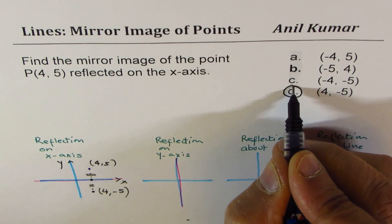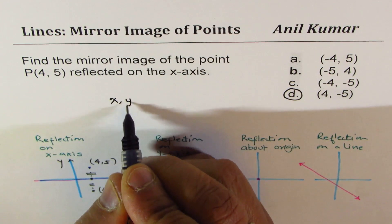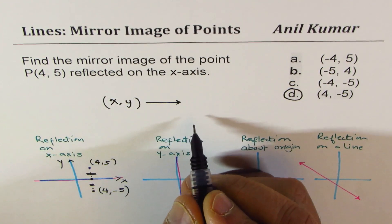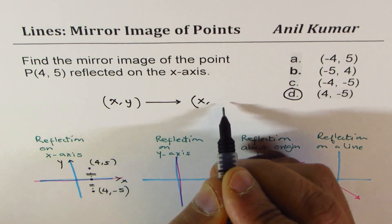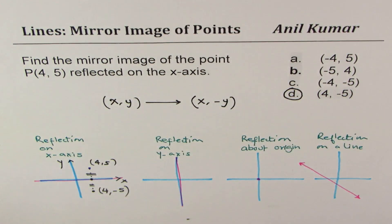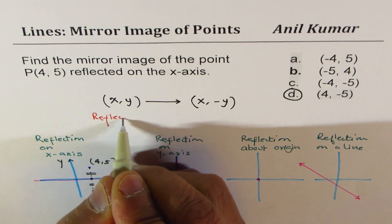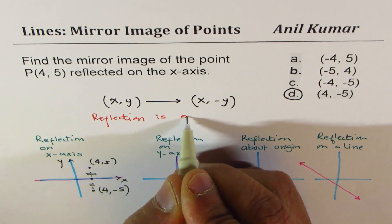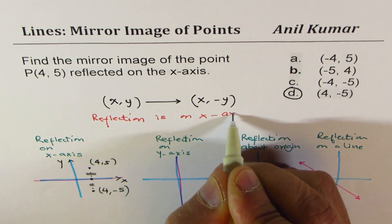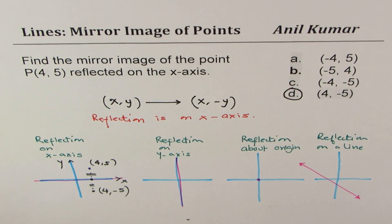So (4, -5) is option D. In general, if there is a point (x, y), then whenever you reflect it along the x-axis, you get (x, -y). This is the result you will get whenever the reflection is on the x-axis. That should help you answer all related questions.